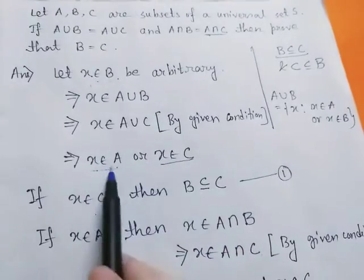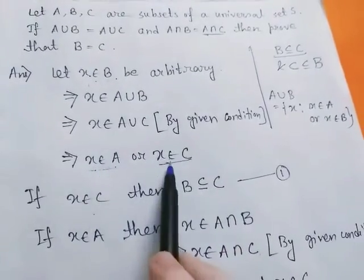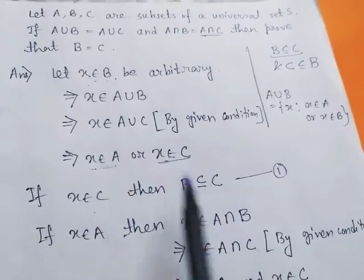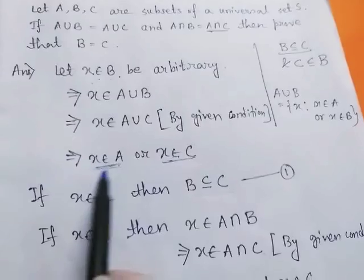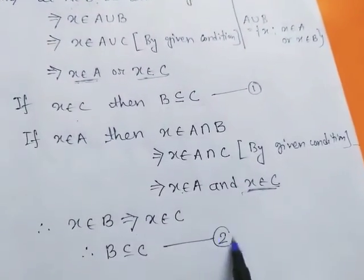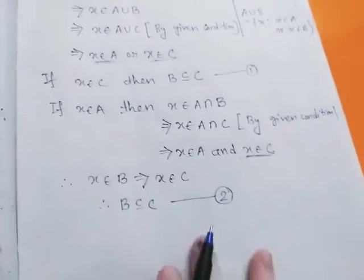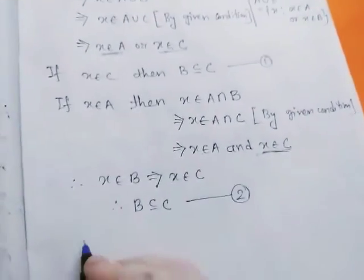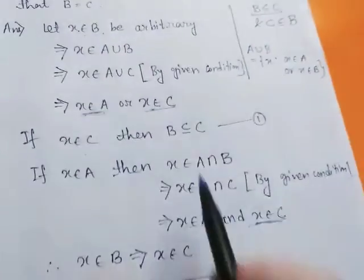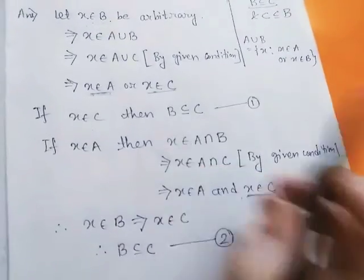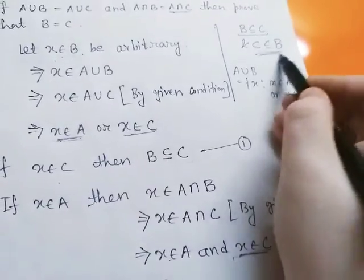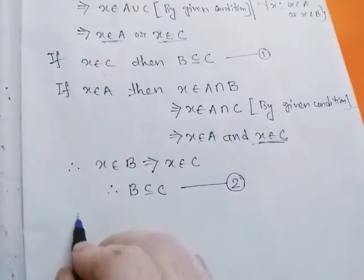So we have two options: either x belongs to C, in which case we proved B subset of C (case 1), or x belongs to A, in which case we also proved B subset of C (case 2). From cases 1 and 2, we see that B subset of C.